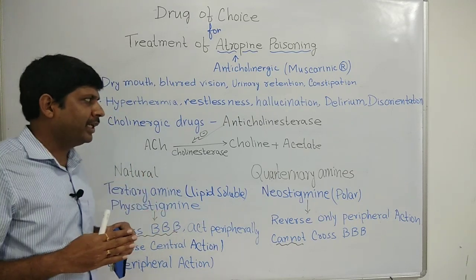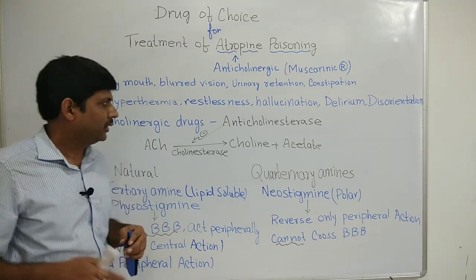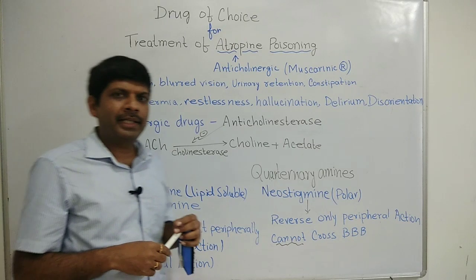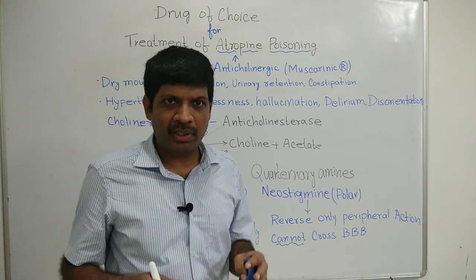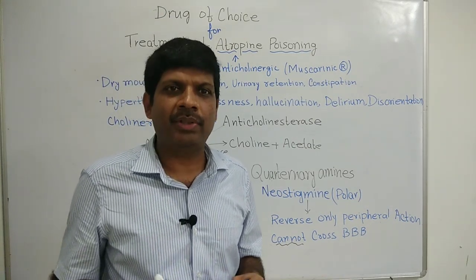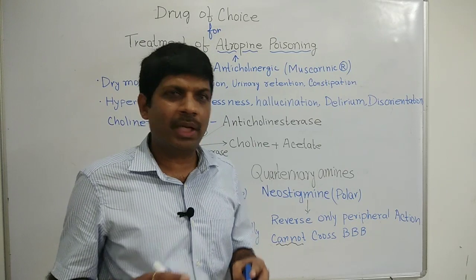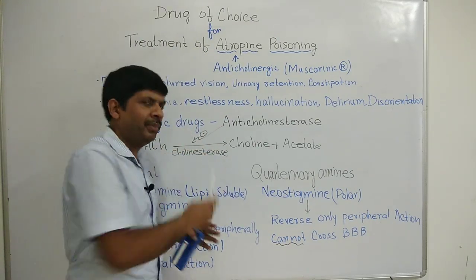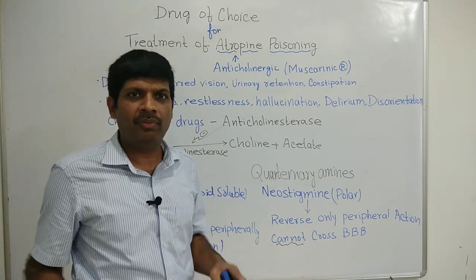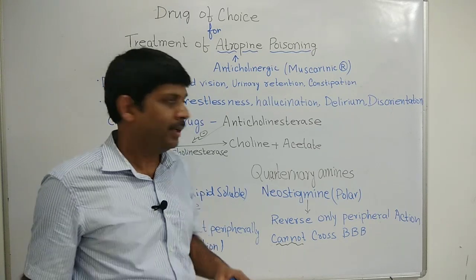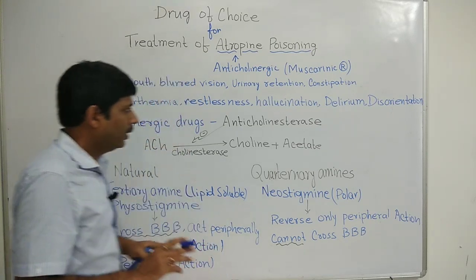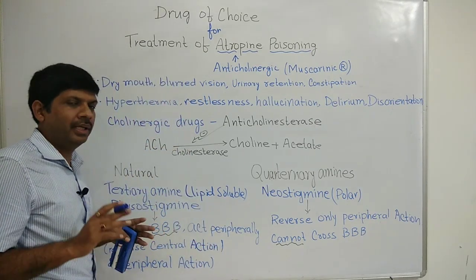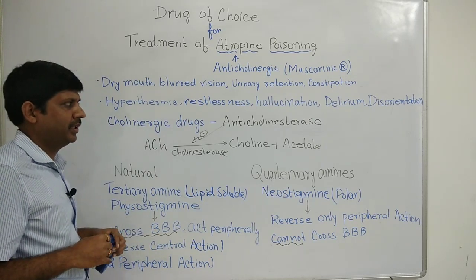So directly acting agents are out of question. Among indirectly acting agents, we have reversible drugs and irreversible drugs. Irreversible drugs are not used because they will inhibit cholinesterase irreversibly, which we do not want. So what remains is the reversible anticholinesterase agent.